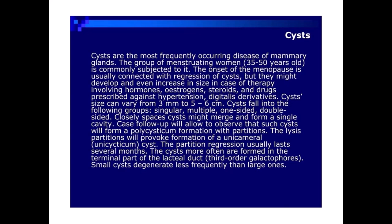Closely spaced cysts might merge and form a single cavity. Case follow-up will allow observation that such cysts will form a polycysticum formation with partitions. The lysis of partitions will provoke formation of a unicameral cyst. The partition regression usually lasts several months. Cysts are more often formed in the terminal part of the lacteal duct — third-order galactophores.